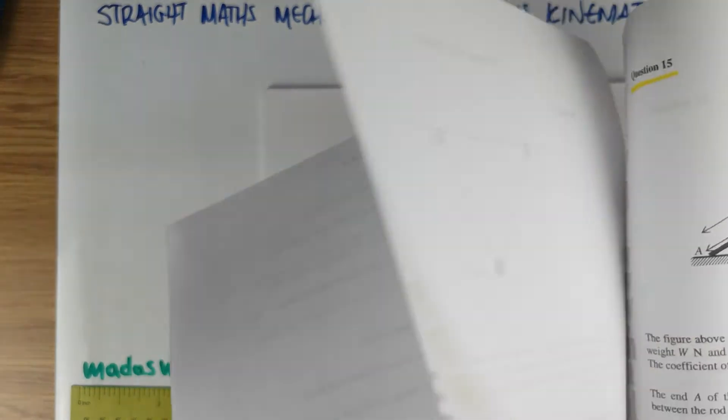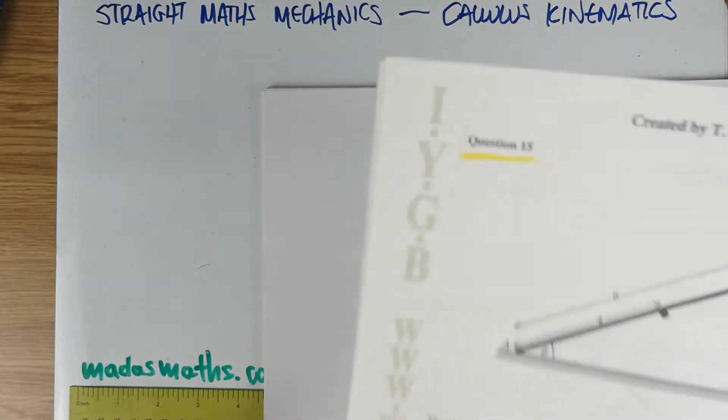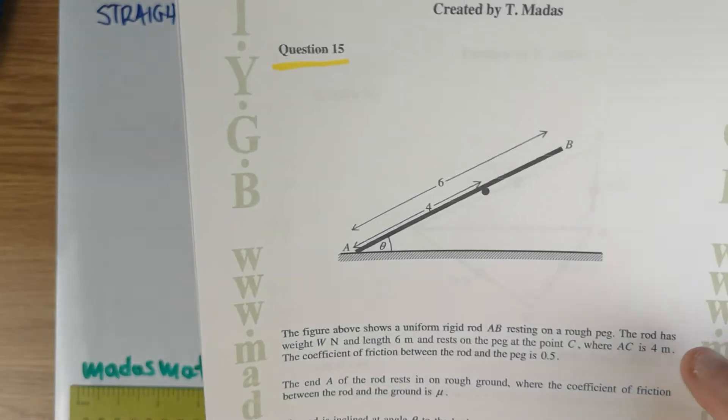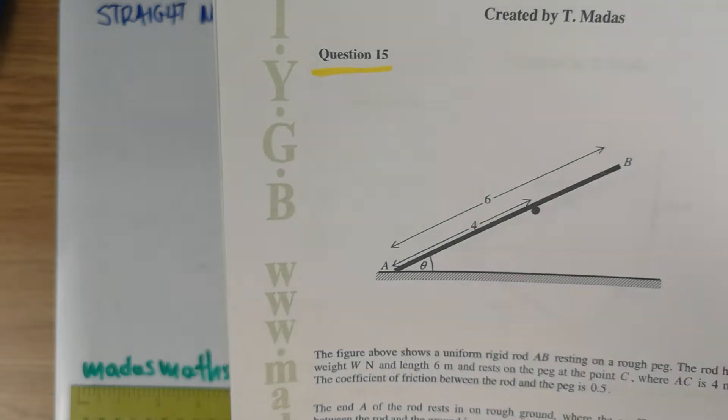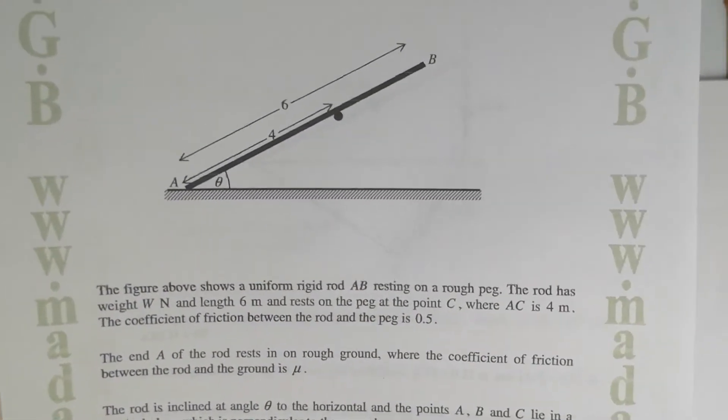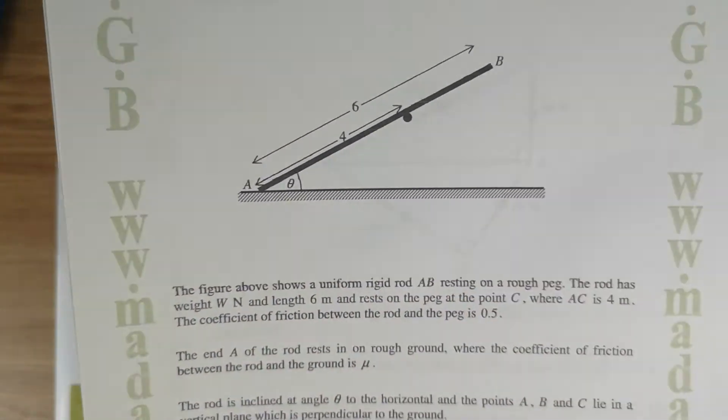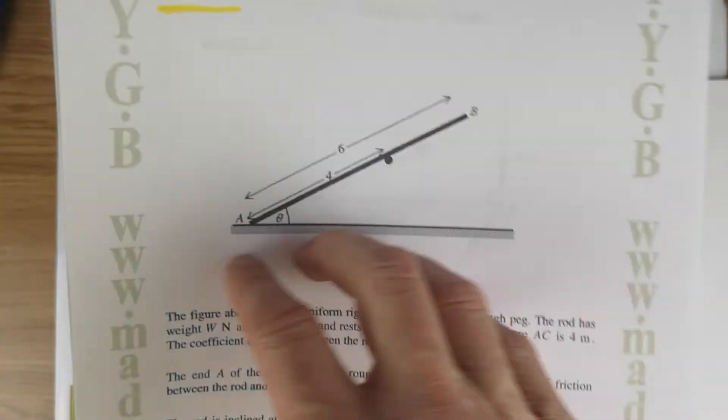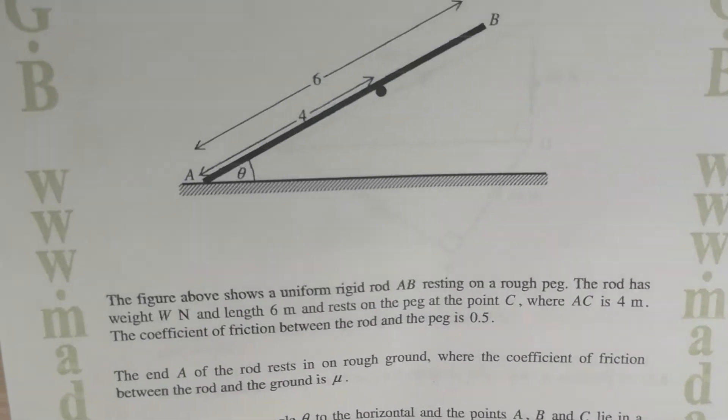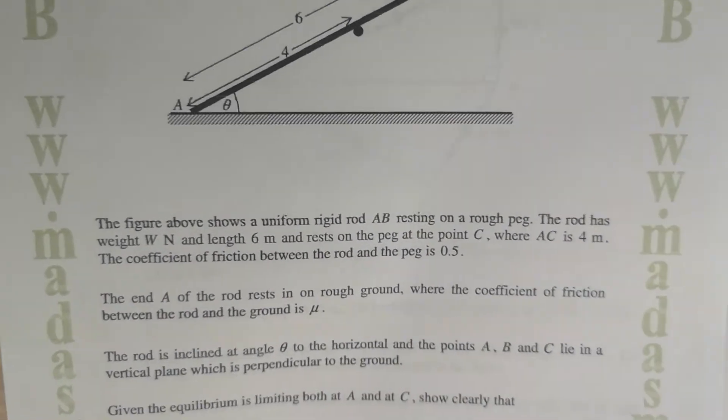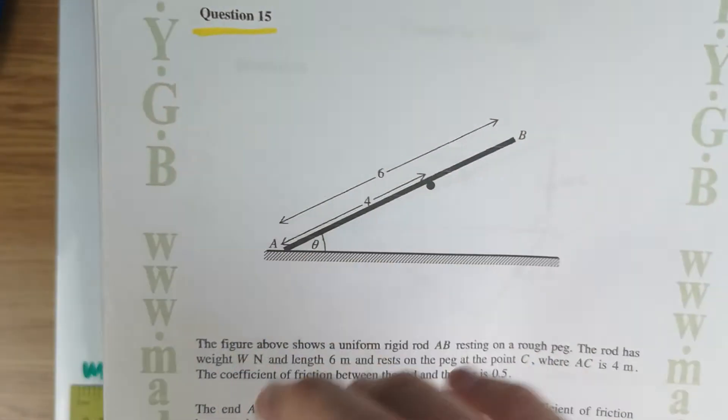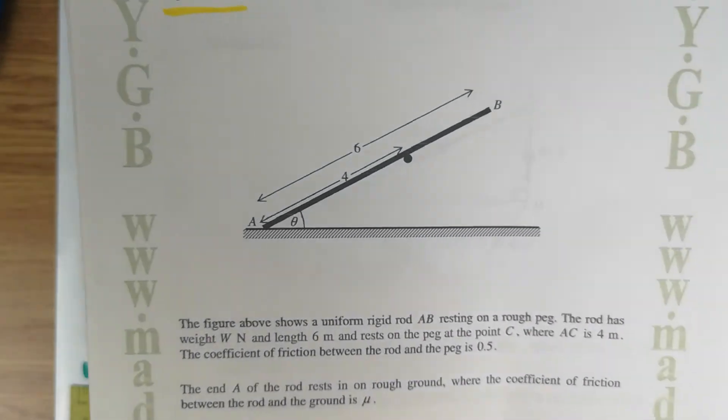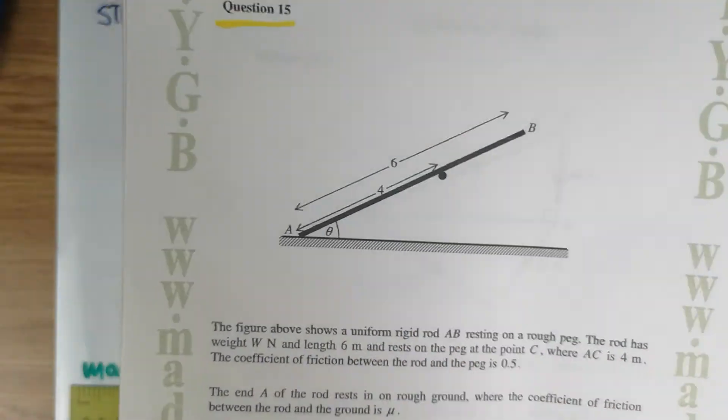This type of question causes problems. It's something to do with equilibrium of some kind of rod against a peg, as you can see from the diagram. Lots of information to be given. With mechanics, I'm going to say please do not read all of this and try to understand the question. Total waste of time.